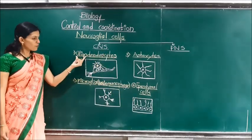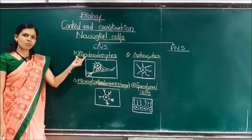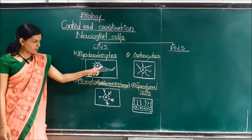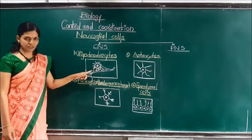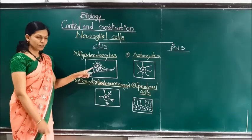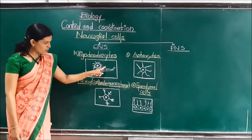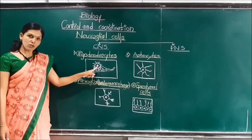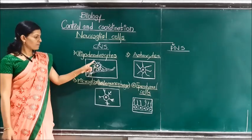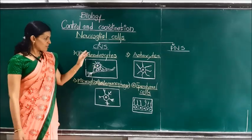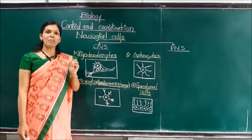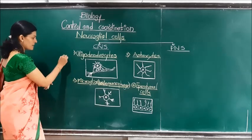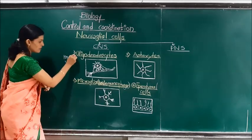First we will focus on oligodendrocytes. The word 'oligo' means few, so oligodendrocytes have few branches. Looking at the structure of oligodendrocytes, they have few branches and a nucleus. These oligodendrocytes secrete a myelin sheath.